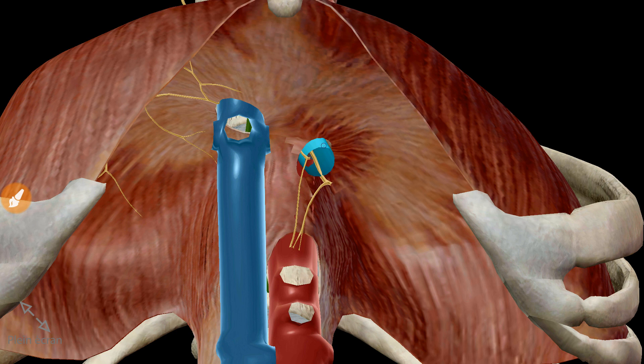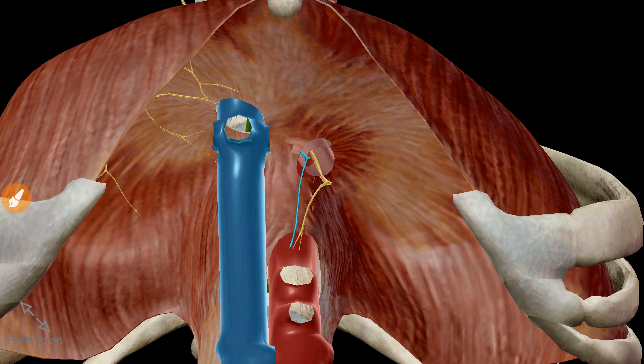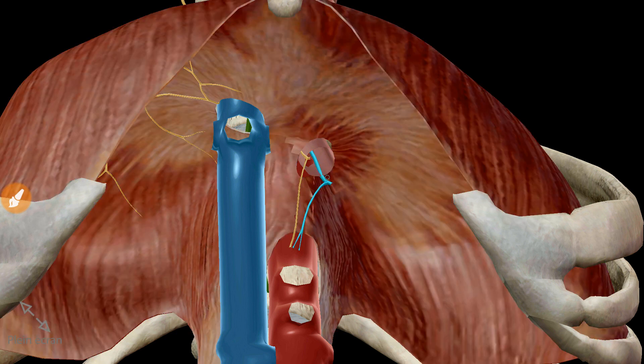It transmits the esophagus. This is the left vagal nerve, which is located anteriorly to the esophagus, and this is the right vagal nerve, which is located posteriorly to the esophagus.